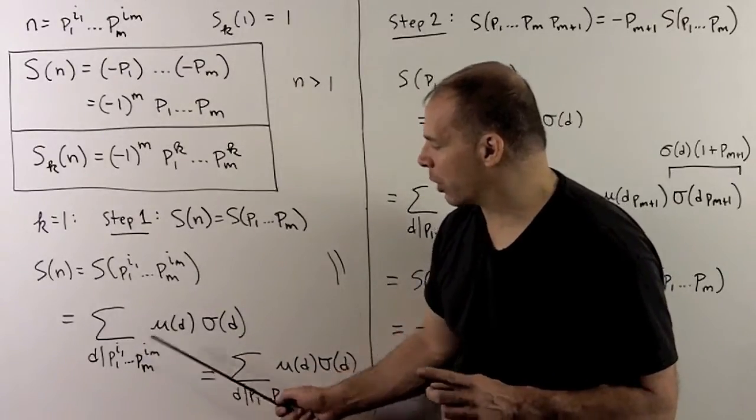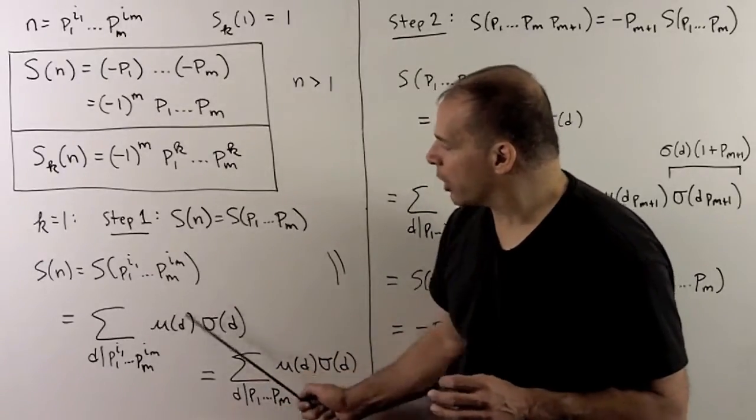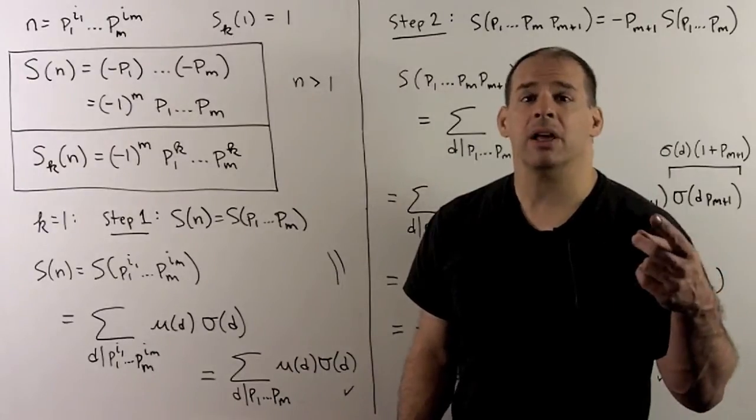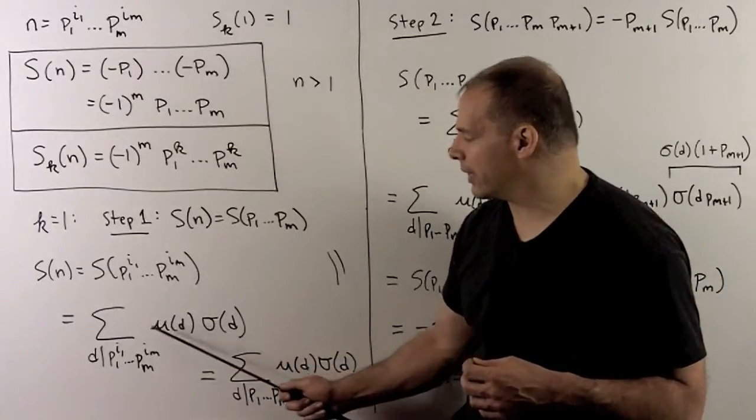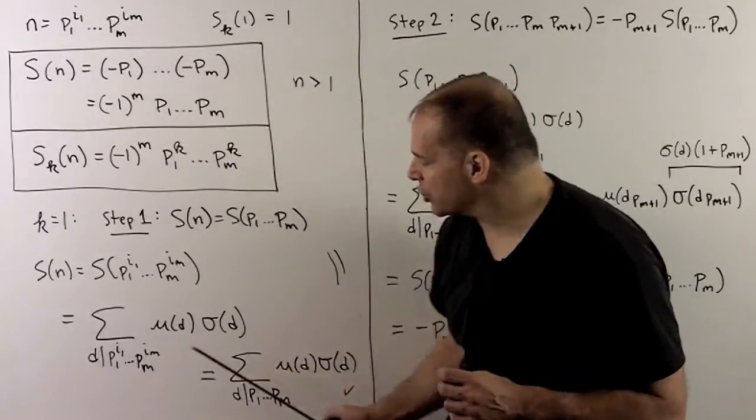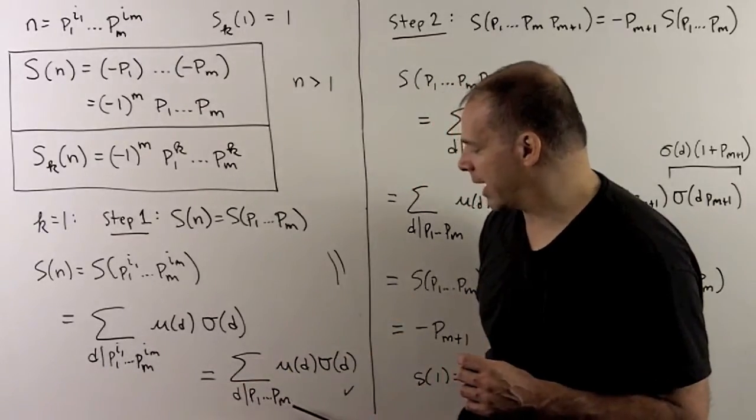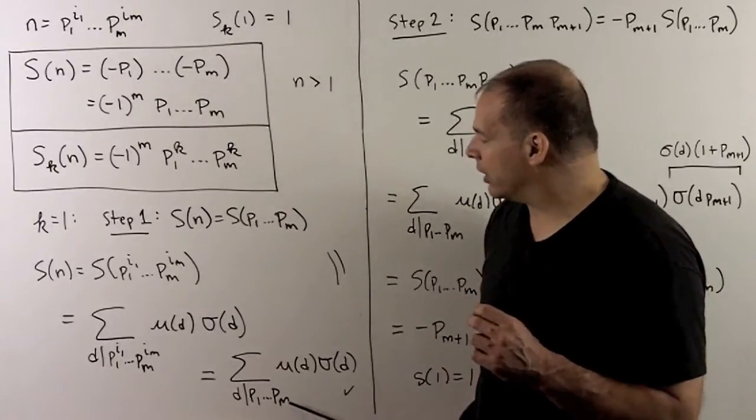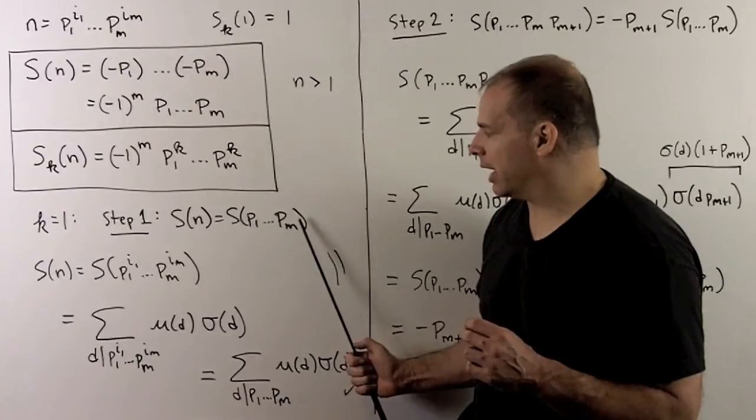Now as we saw on the previous board, the only sums I have to consider are those which have no squares in them. If we have a squared prime, the mu is going to go to zero, and then that term vanishes. So all I have here are going to be divisors of p1 through pn.